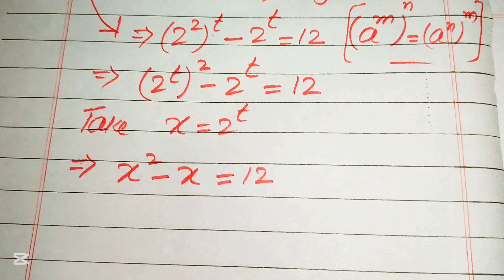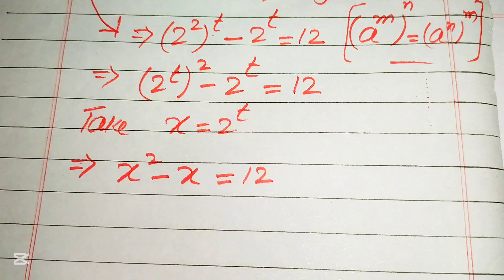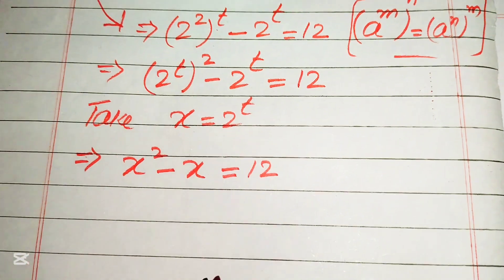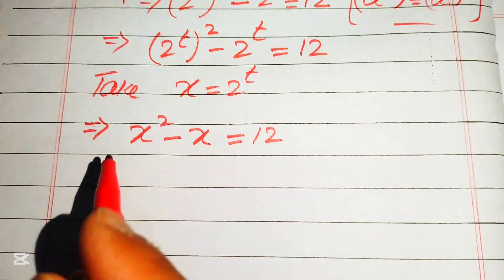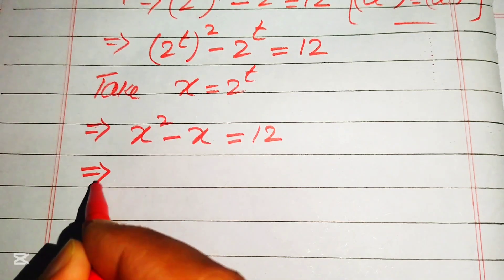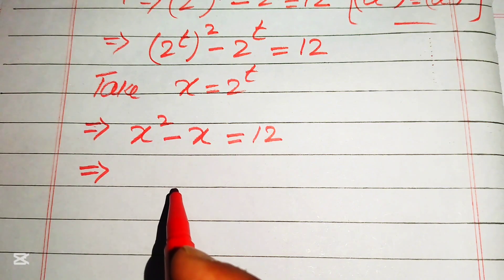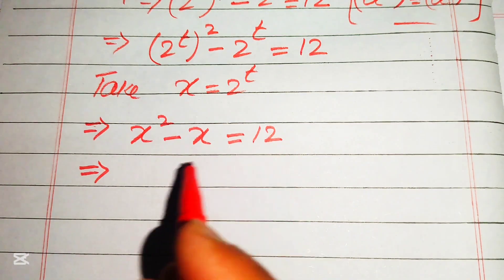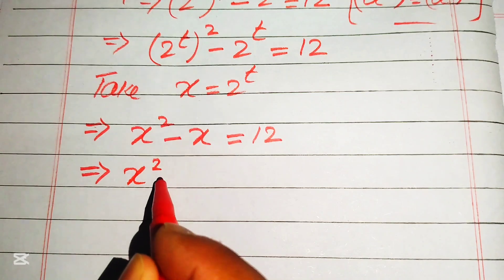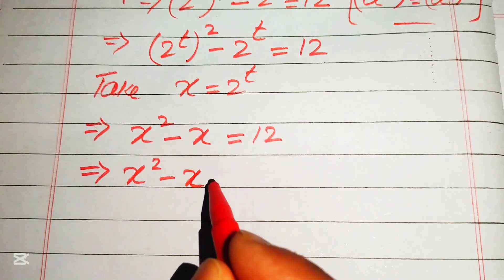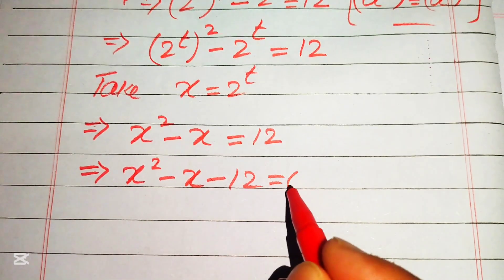This equation is now quadratic in x. We can solve it using the quadratic formula or by factorization. We will use the factorization method by breaking the middle term. Moving 12 to the left-hand side gives us x squared minus x minus 12 equals 0.